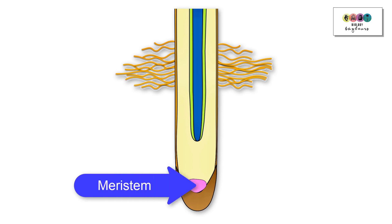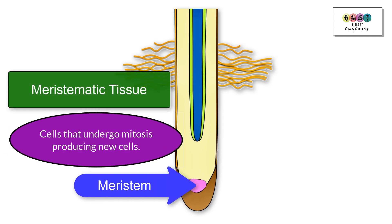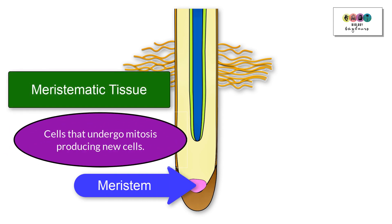Protected by the root cap is the meristem. This is meristematic tissue, a group of similar cells that can undergo mitosis to produce new cells. So the function of the meristem is the production of new cells by mitosis.